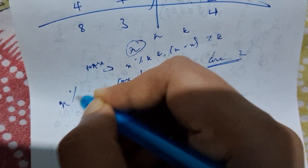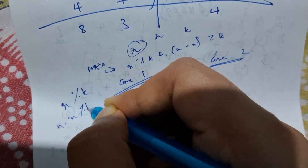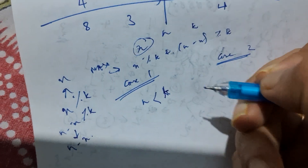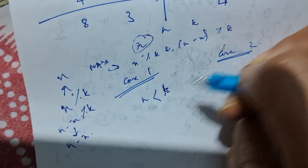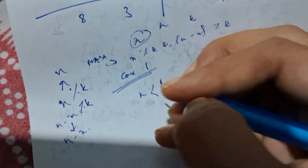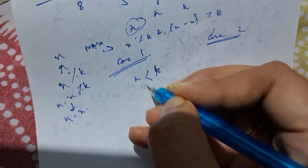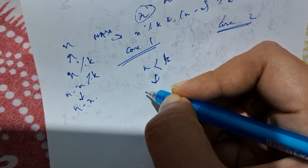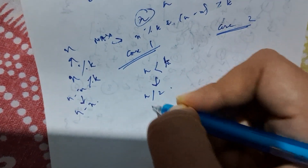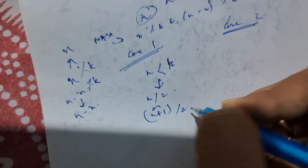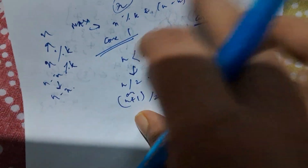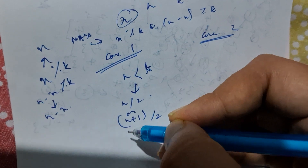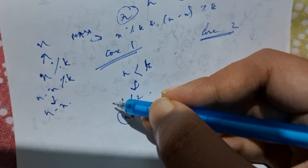Whatever the value of x mod k is, and whatever the value of (n minus x) mod k is — since n is already lesser than k, x mod k becomes x, and (n minus x) mod k remains n minus x. So by the greedy approach, the answer is going to be n/2 or (n+1)/2. You calculate both and whichever gives the maximum, that is the answer.